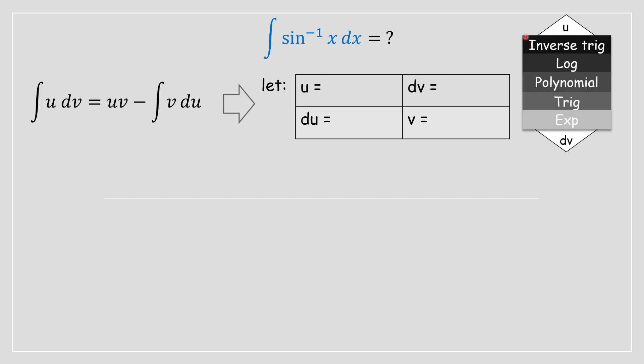If you're looking at this chart right in front of you, inverse trig is going to be most definitely your u variable, and your polynomial, since it's found lower down the list, is going to be your dv variable.